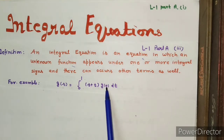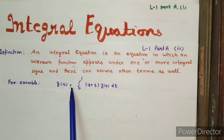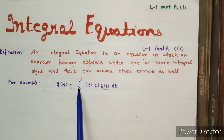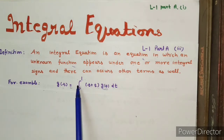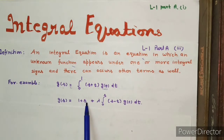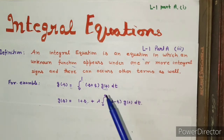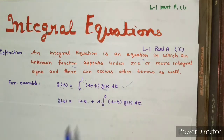For example, g(s) = integral from 0 to 1 of (s + t) g(t) dt. Here this is an integral equation where the unknown function is g(t) and it occurs under the integral sign. Other terms can also be involved. Another way to write an integral equation is with limits 0 to s. These are examples of integral equations, and we will study the history of where this started.